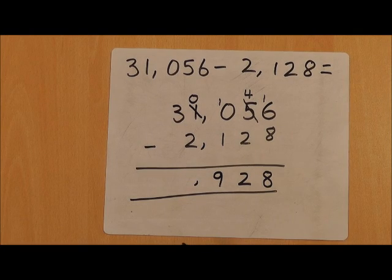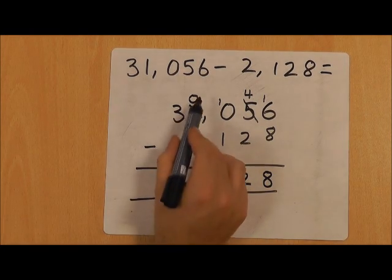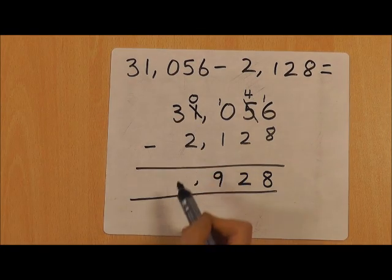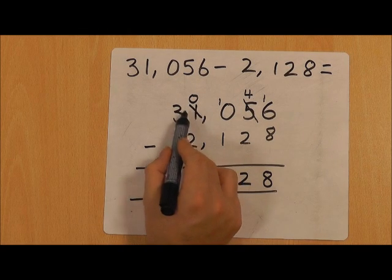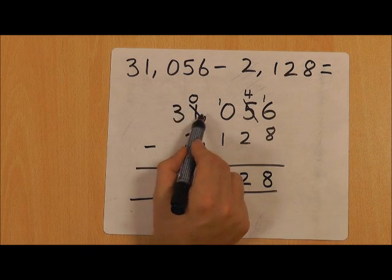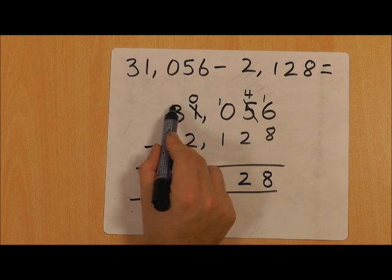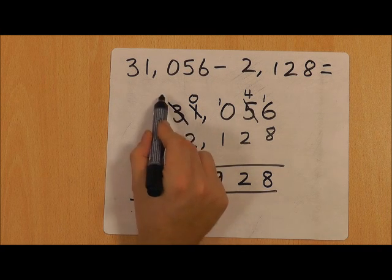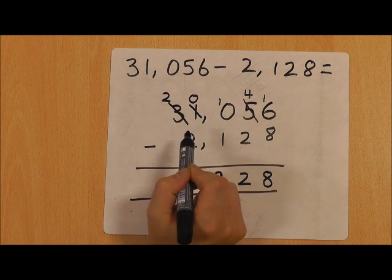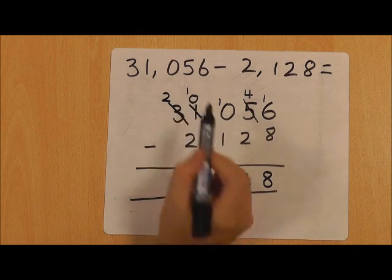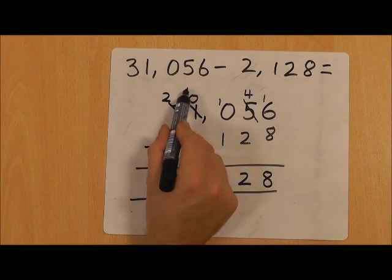I'm going to put my comma in to show that we're now into thousands. 0 take away 2, again we can't do because the bigger number is not on top, so we need to borrow from this 3. We're going to make that 2 because we've taken one away, and we're going to put the 1 that we've exchanged there.